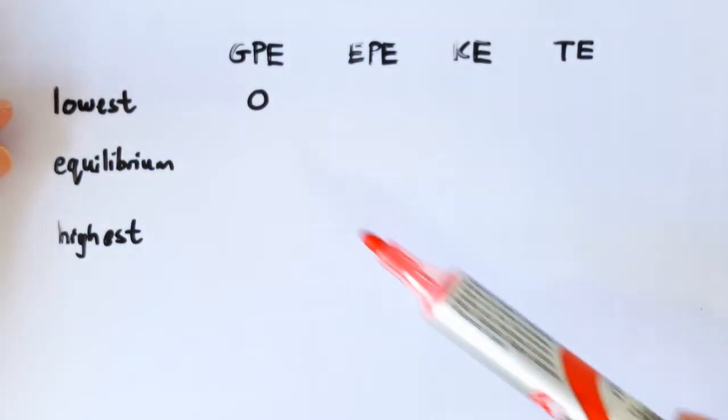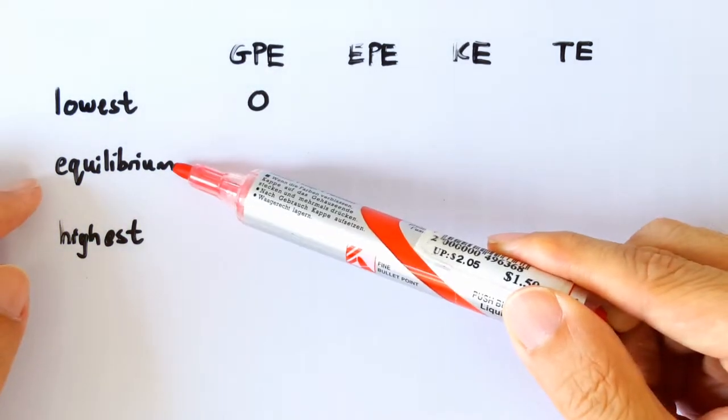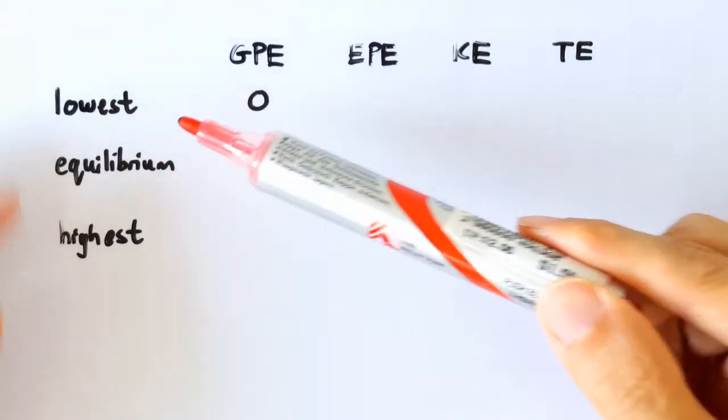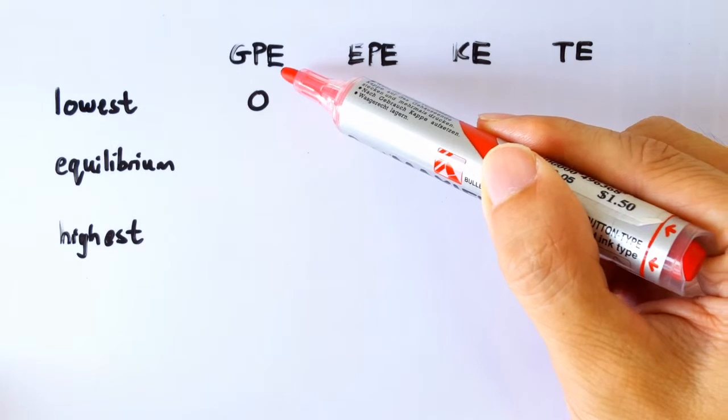So when the spring mass system goes from here to here and when it goes from here to here, it travels the same distance. Alright, so let's first complete the GPE column.